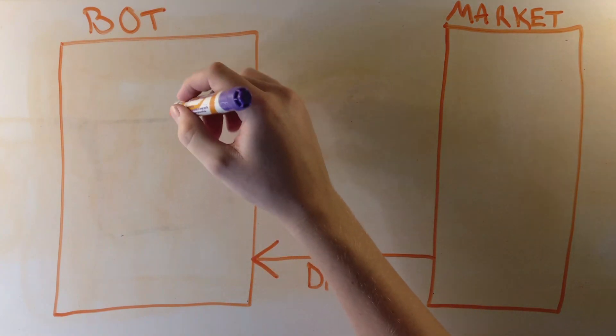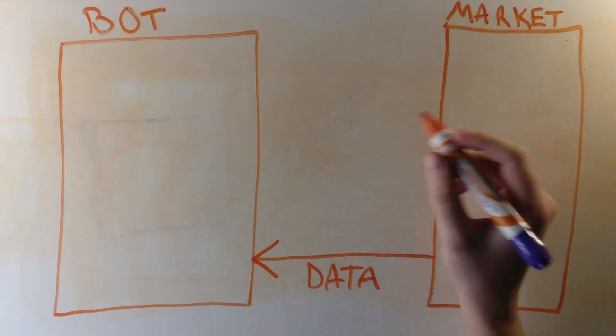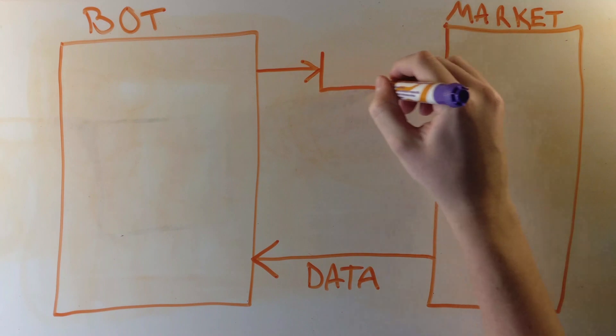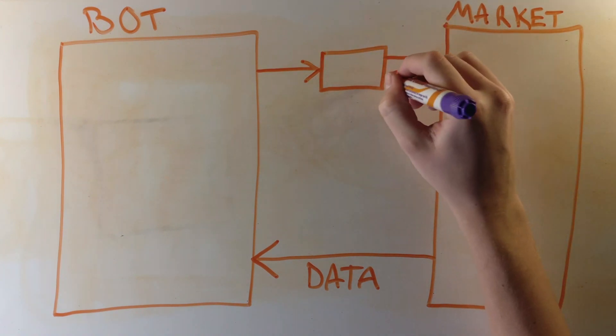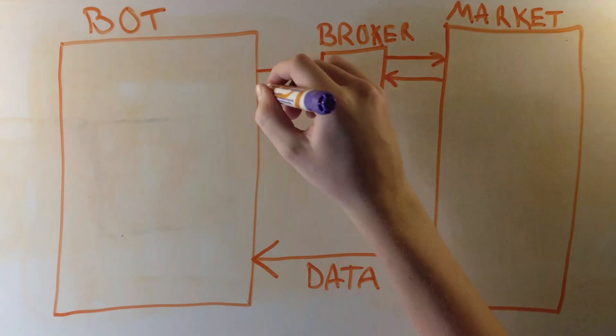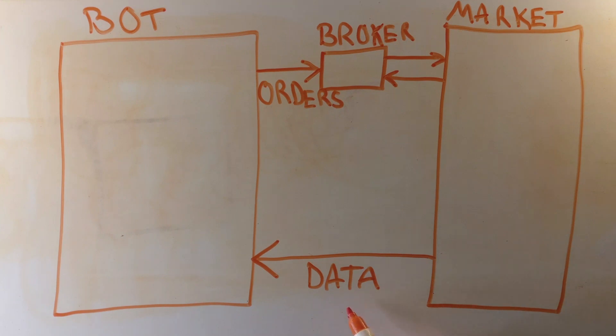The bot then processes the data and produces buy and sell orders to send to the market. In our case, this will be via a broker, and this broker will interact with the markets for us. Let's focus on this first part of the process: the data collection.